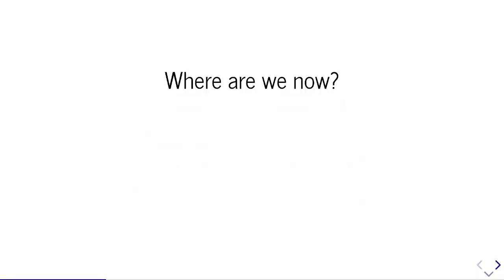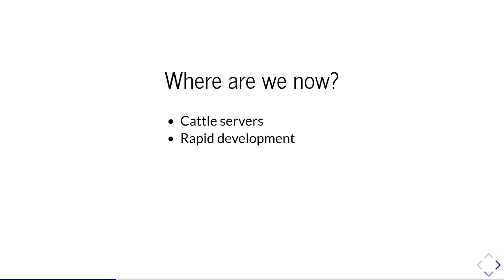But things have changed — hopefully. We now have cattle servers and use some automation. You should use Ansible or Puppet, or if it comes down to worse, use Salt — but don't use shell scripts, don't do it manually. Development has sped up a lot. You have projects that release every other week or every month. If you go to a project on GitHub and see the last commit was half a year ago, is it even alive? If the last commit was two years ago, the project is certainly dead.